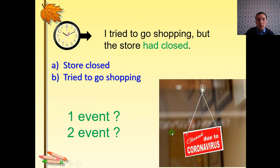Let's practice now. For example, I tried to go shopping but the store had closed. Here is the question: which event is first, A or B? You have five seconds to think. Yes, the first event is the store had closed, that's past perfect, and the second event is tried to go shopping.